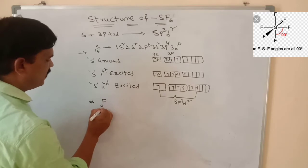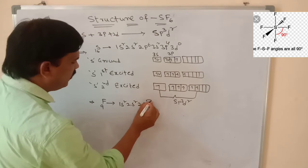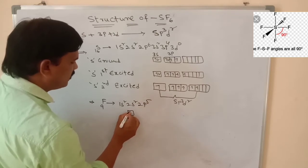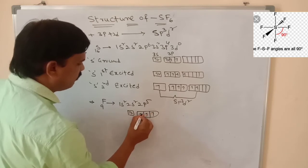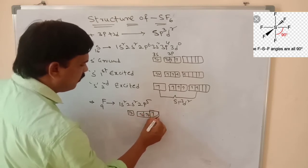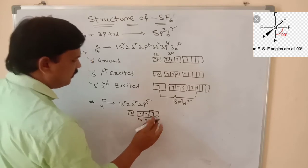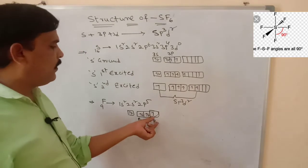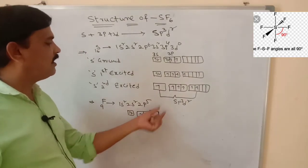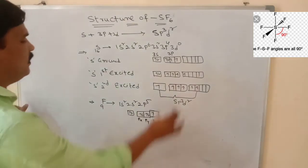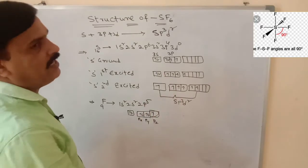Fluorine has atomic number 9 and its electronic configuration is 1s2, 2s2, 2p5. In 2s there are 2 electrons. In 2p5, each orbital gives 1 electron, then pairing starts — giving px, py, pz orbitals. The pz unpaired electrons of six fluorines overlap with the sulfur second excited state sp3d2 hybrid orbital electrons, forming six single sigma bonds.